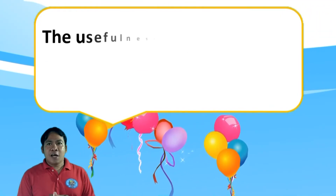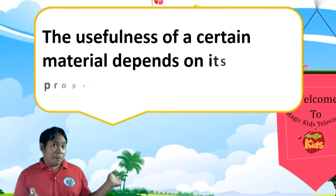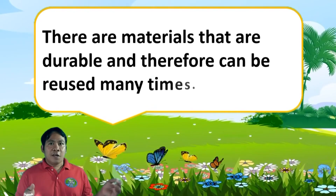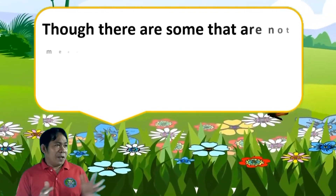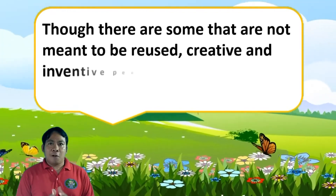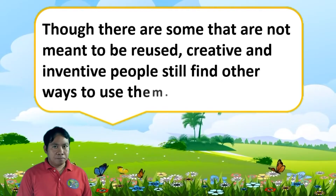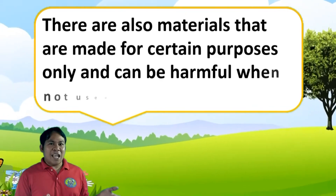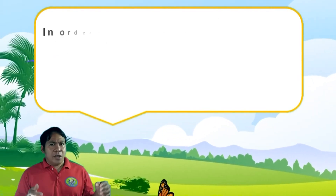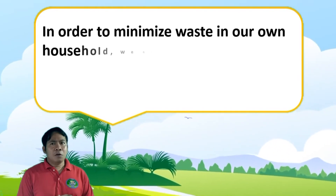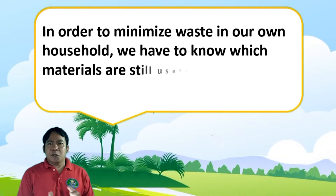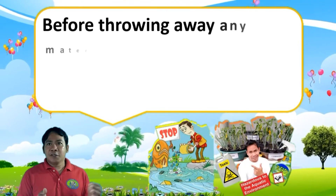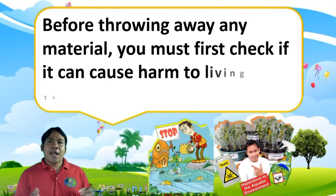The usefulness of a certain material depends on its properties. There are materials that are durable and therefore can be reused many times. Though there are some that are not meant to be reused, creative and resourceful people still find other ways to reuse them. There are also materials made for certain purposes only that can be harmful when not used or disposed of properly. In order to minimize waste in our own household, we have to know which materials are still useful and which ones should already be disposed of. Before throwing away any materials, we must first check if they can cause harm to the environment.